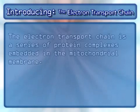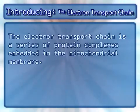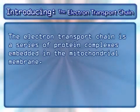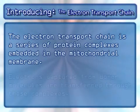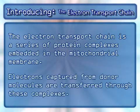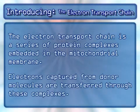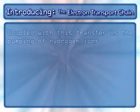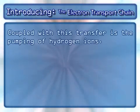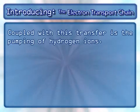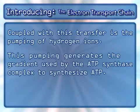The electron transport chain is a series of protein complexes embedded in the mitochondrial membrane. Electrons captured from donor molecules are transferred through these complexes. Coupled with this transfer is the pumping of hydrogen ions, which generates the gradient used by the ATP synthase complex to synthesize ATP.